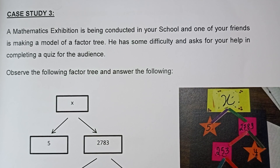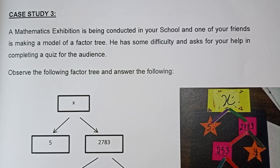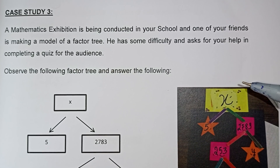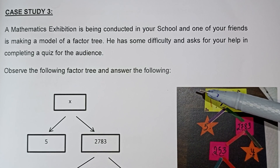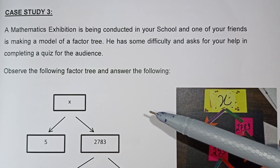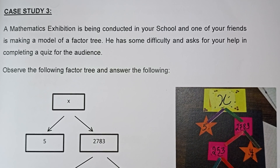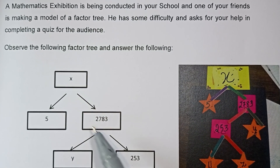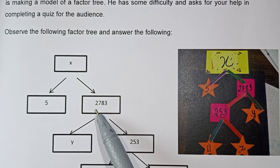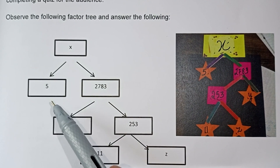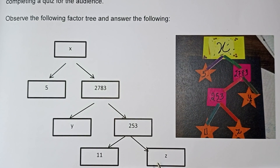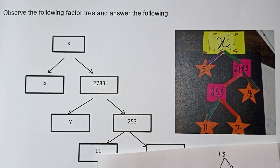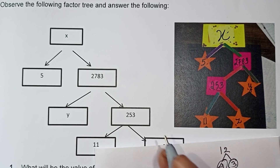The last case study is on real numbers. A mathematics exhibition is being conducted in your school. One of your friends is making a model of a factor tree. The factor tree model is given. It's very simple. If you break the number at each node, 5 splits as 2 and so on. 4 and 3 are factors, and 4 × 3 = 12, which is option D.